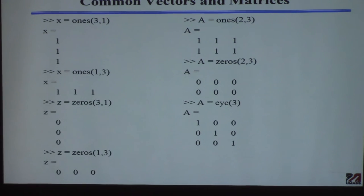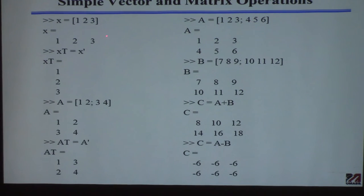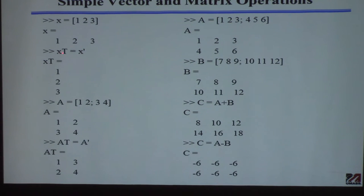Here are some matrix manipulations. You create a row vector x, and then if you want the transpose — making it a column vector — you issue the command x-prime and call it xt for x-transpose. That gives you the column vector.